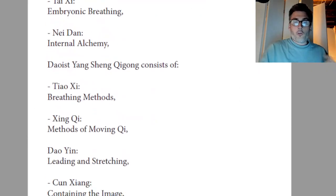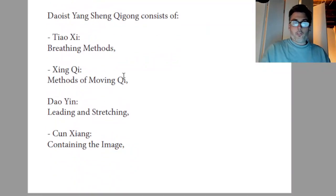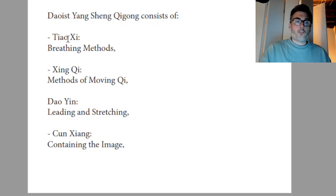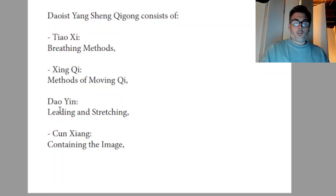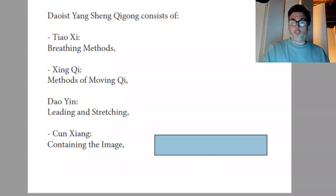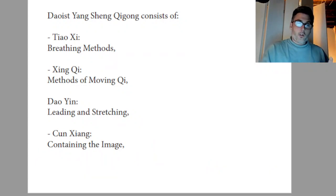In the Taoist Qigong school, there are several categories. Tiao Xi refers to breathing methods, of which there are many different types. Xing Qi refers to methods of moving Qi, which are often also associated with breathing. Dao Yin means leading and stretching, which is basically moving Qigong. And Cunxiang means containing the image, or visualization. These are the major genres recognized today as the umbrella categories for Taoist Qigong and meditation.